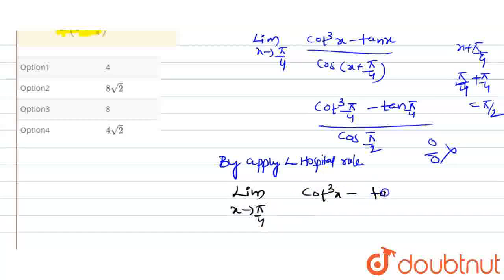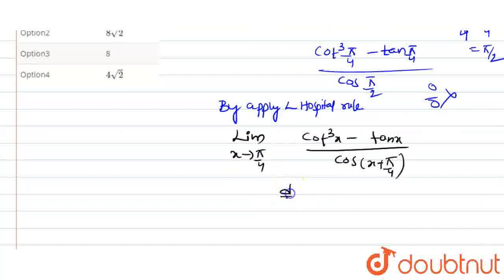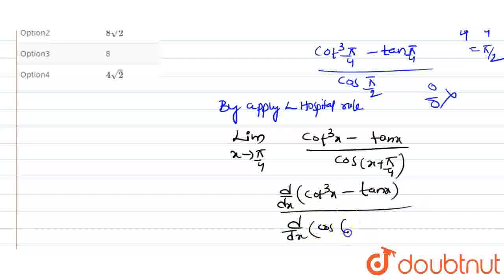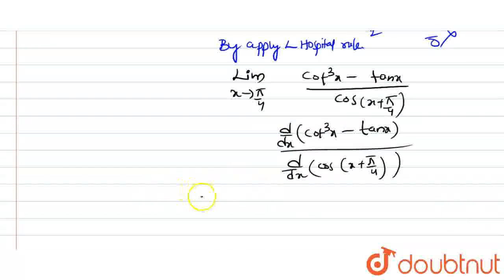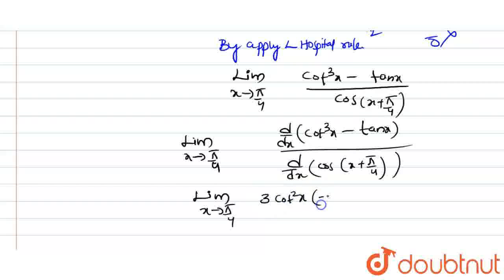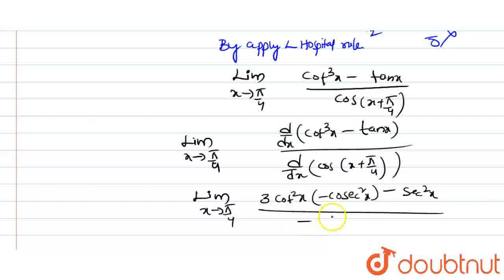Since we have a 0 by 0 indeterminate form, we need to simplify the expression: cot cube x minus tan x by cos of x plus pi by 4. Here we rearrange and simplify: limit x tends to pi by 4.